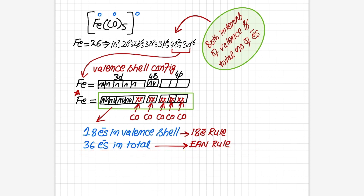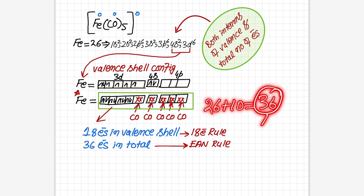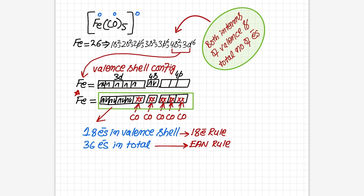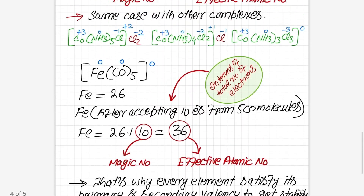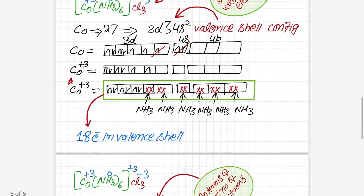Iron attains this EAN of 36 and gains stability. To reach 36, iron first has 26 electrons, so it needs 10 more — that 10 is the magic number. Adding 10 to 26 gives 36, the EAN. I hope you have a complete understanding of this lecture. If there are any questions, let me know and I will explain to the best of my knowledge.